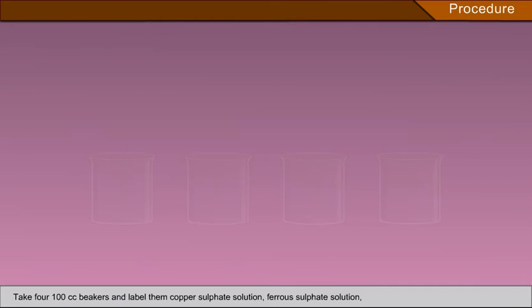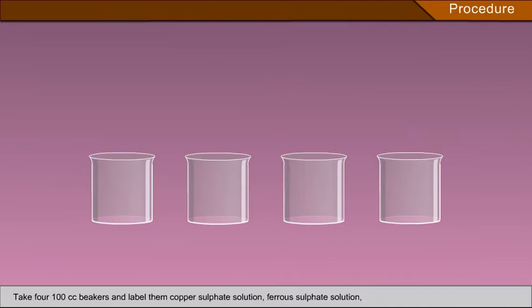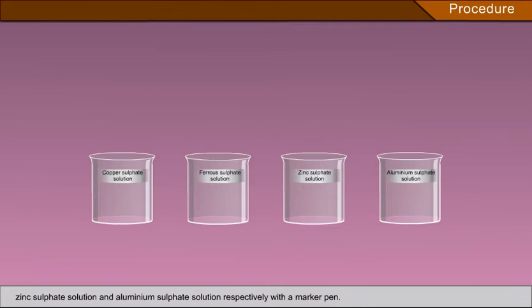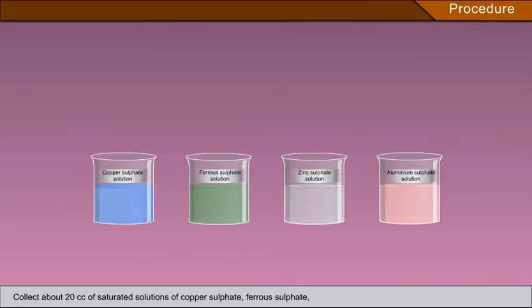Procedure: Take 400 cc beakers and label them copper sulphate solution, ferrous sulphate solution, zinc sulphate solution and aluminium sulphate solution respectively with a marker pen. Collect about 20 cc of saturated solutions of copper sulphate, ferrous sulphate, zinc sulphate and aluminium sulphate in the respective beakers marked above from the common shelf.